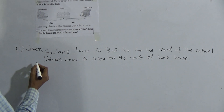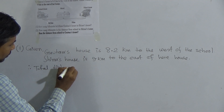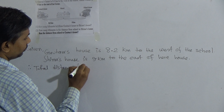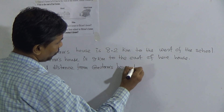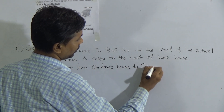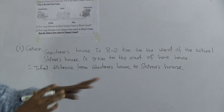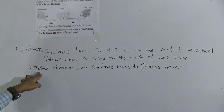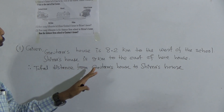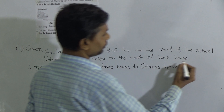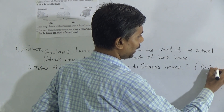Therefore, total distance from Gautam's house to Shima's house. You see the word 'total' is written — when you see 'total,' you must do addition. So total distance from Gautam's house to Shima's house is 8.2 plus 9 kilometers.